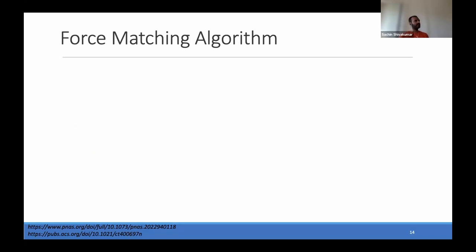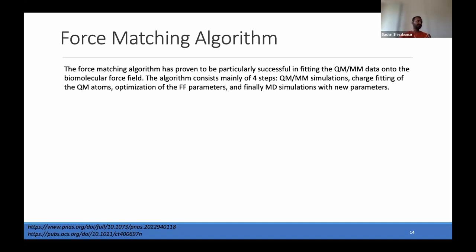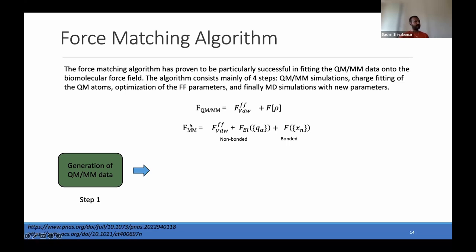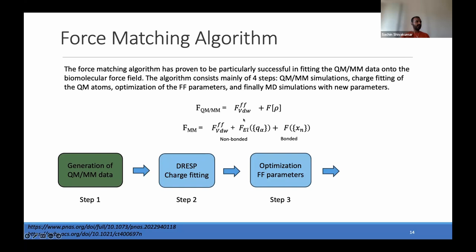Force matching: the idea is to use QM/MM data to optimize the biomolecular force field. The name comes from the fact that we try to optimize the force field based on forces calculated in QM/MM simulation and compare them with forces at the classical scale. There are four steps: (1) generation of data, (2) fitting charges on the QM atoms to find non-bonded forces, (3) optimizing bonded parameters by finding the bonded forces, and (4) simulating the system with the optimized parameters. For the data generation step, we need three data points: the electric potential and electric field on the short-range atoms directly coupled with the QM region, and the forces on the QM region.